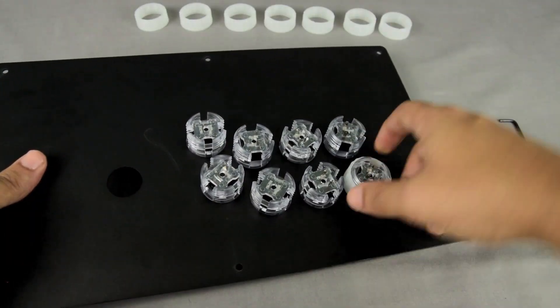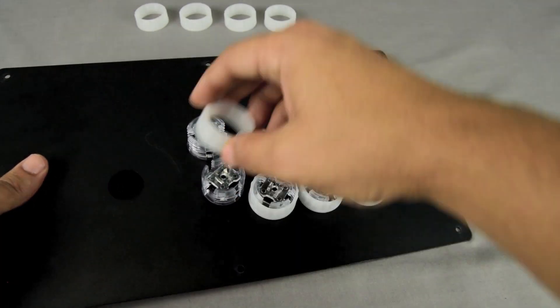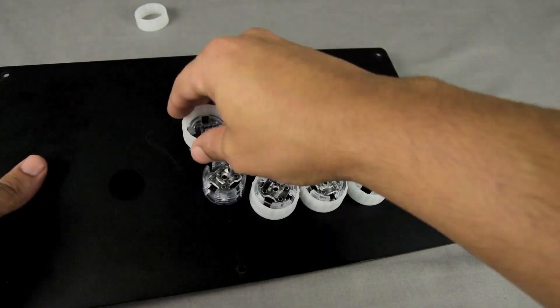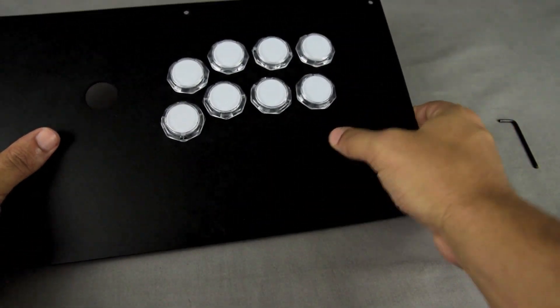Once all the buttons are seated, fasten them down using the lock washers. Since this is a currently bare housing with no electronic parts in it, we won't go over connecting wiring, but it's treated the same as any other push button. Just reconnect your cables in place of where the old push buttons were.